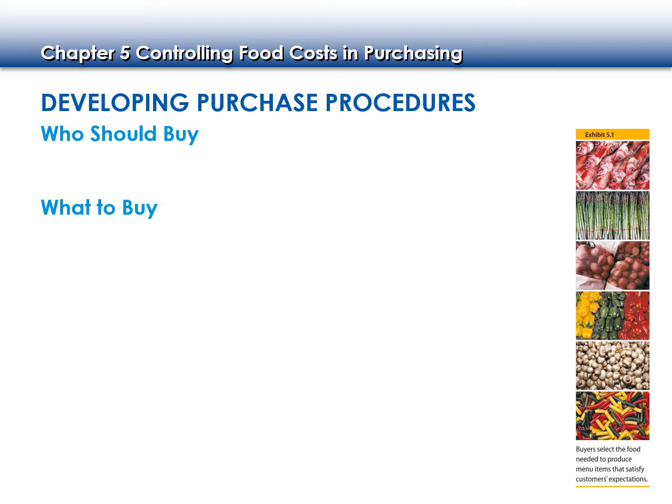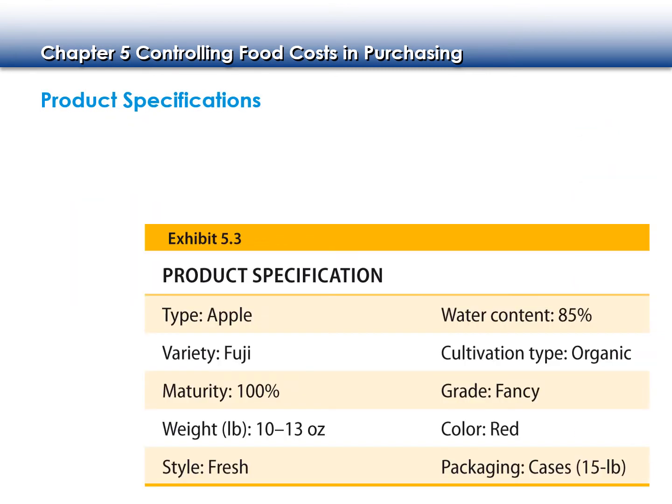It's important for us to understand who should buy and what they need to be buying. People should be trained — we should not just let anybody purchase the food. What happens is we might run out of food if we don't order enough, or we might order too much food and the product goes bad. Through training, those people who have been trained are the ones who should actually be buying the food. In addition to quantities, we also have product specifications — so both quantities and the quality of our products.